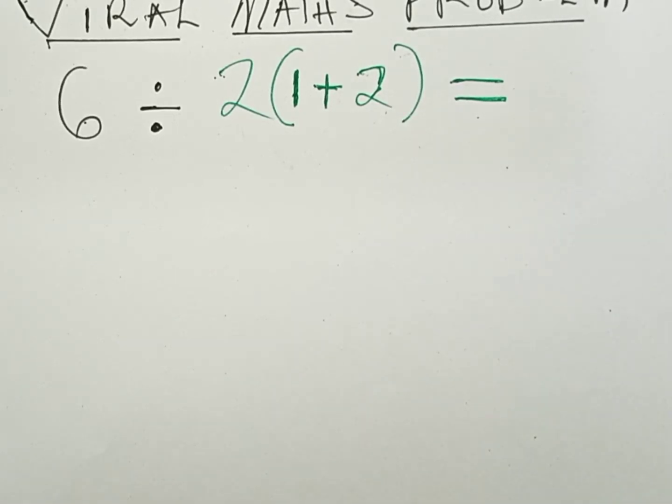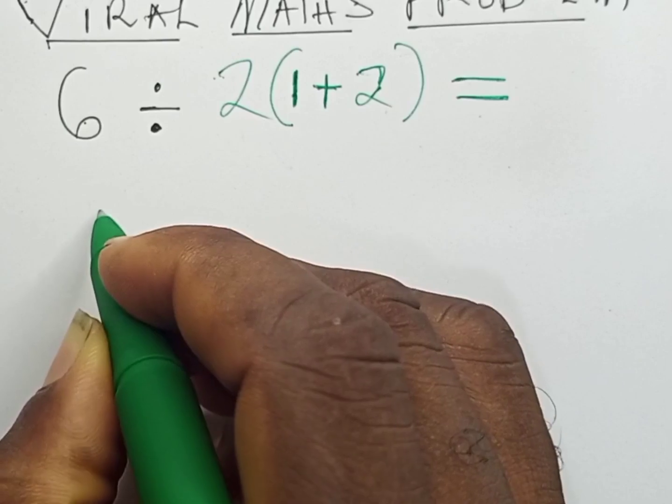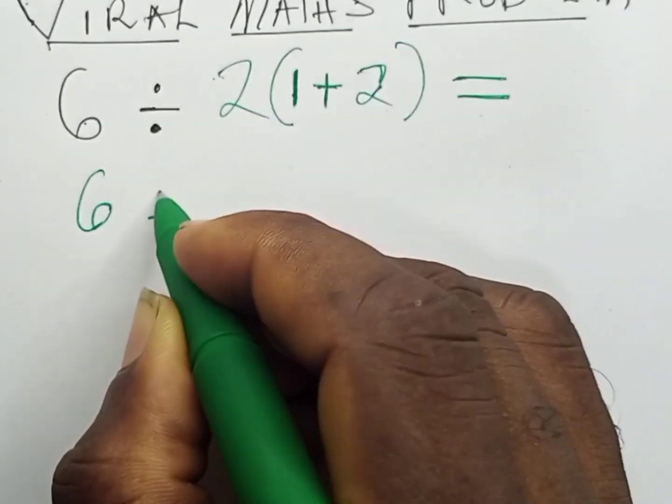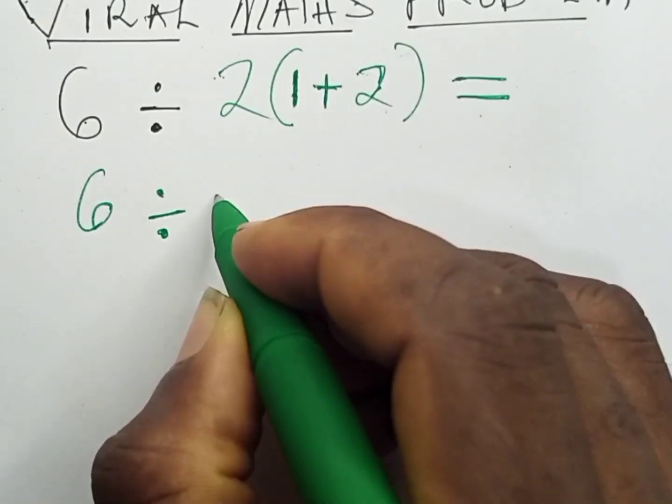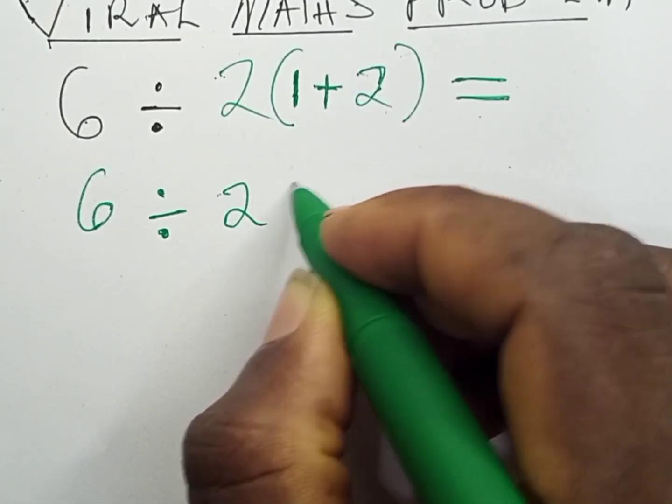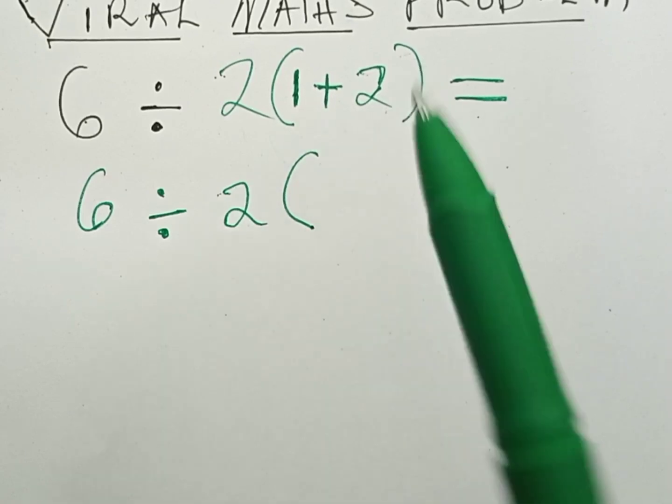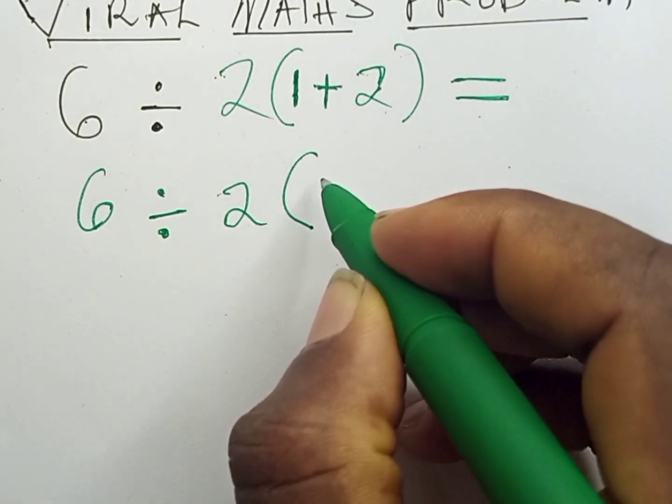So for us to solve this, we can write this as 6 divided by 2, open bracket 1 plus 2, which equals 3.